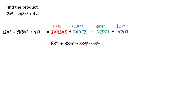Multiply to get 6x to the fourth plus 8x squared y minus 3x squared y minus 4y squared. Combine like terms to get 6x to the fourth plus 5x squared y minus 4y squared.